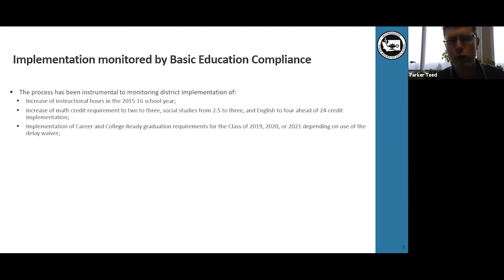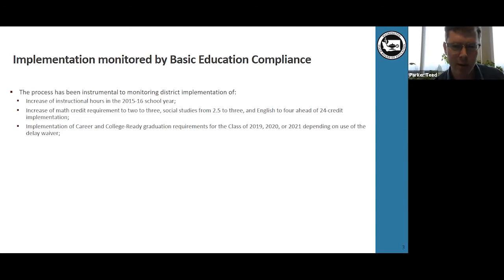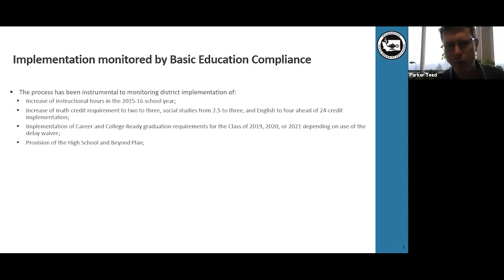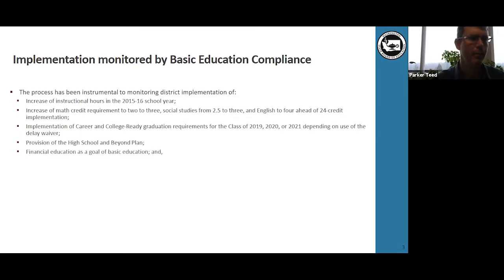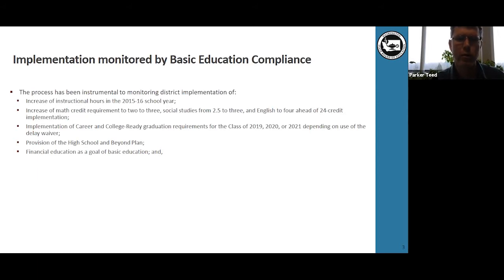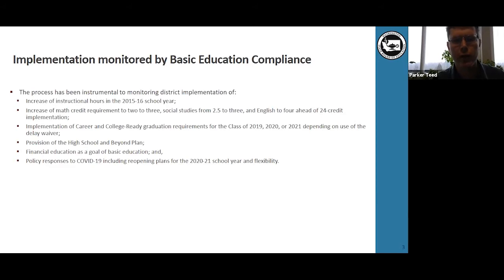The different aspects of the subject area credit graduation requirements, and also policies such as graduation pathways or mastery-based crediting that support the career and college-ready graduation requirements, the provision of the high school and beyond plan at appropriate grade levels with an electronic platform as required during this school year, financial education as a goal of basic education, and how computer education and technological education as goals of the program of basic education are being required by districts. Unique to this school year are policy responses to COVID-19, including reopening plans for the 2021 school year and flexibility around the instructional requirements as made in emergency and permanent rule.